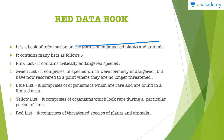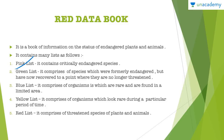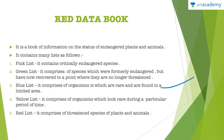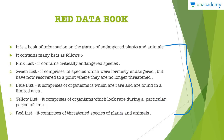Let us talk about the Red Data Book. It is basically a book of information on the status of endangered plants and animals, and it has different lists for different categories. There is a pink list containing critically endangered species; a green list for species formerly endangered but now recovered; a blue list for organisms that are rare and found only in a limited area; a yellow list for organisms which appear rare during a particular period — basically seasonal variations; and a red list comprising threatened species of plants and animals.